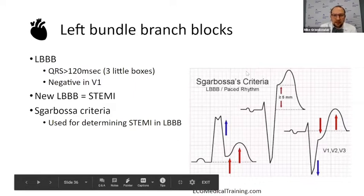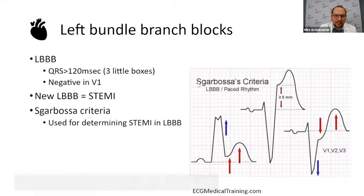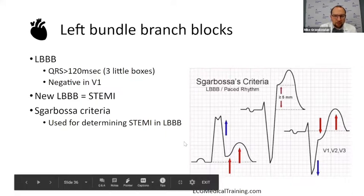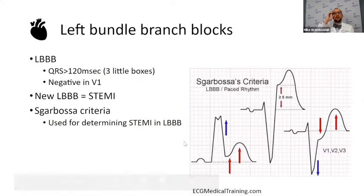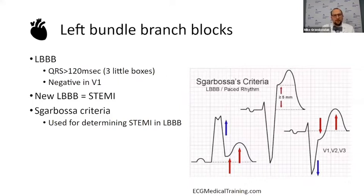So those are the Sgarbossa criteria. You don't have to have them memorized, but basically know that for people with left bundle branch blocks, we use these criteria to differentiate whether they're having a STEMI — to figure out whether this is something we have to intervene on rapidly, or if it can wait.